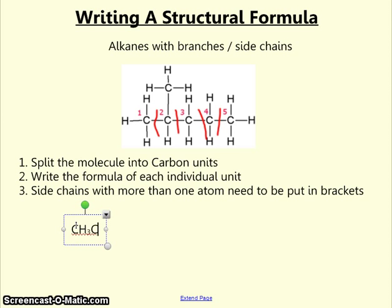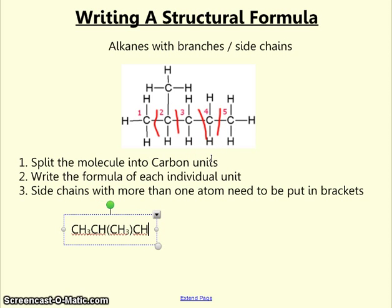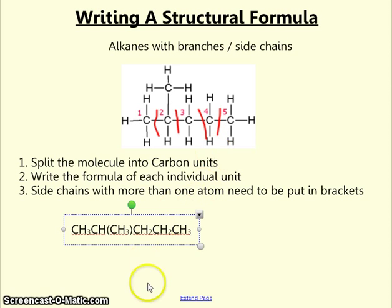Starting with CH3, on carbon number two we have a CH, but attached to the carbon is also this methyl group, CH3. Because there is more than one atom in that methyl group, we put it within brackets. Then we continue the chain as normal — carbon three and carbon four are both CH2s, and finally carbon five is CH3. That is how 2-methylpentane can be written in a structural formula.